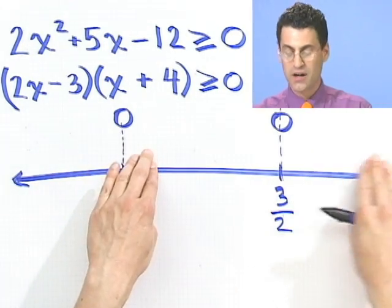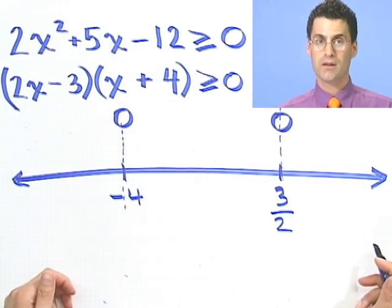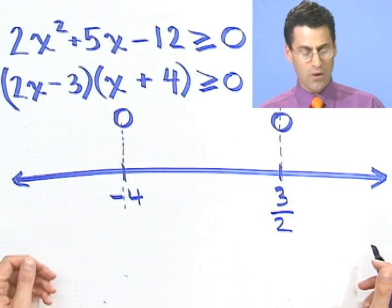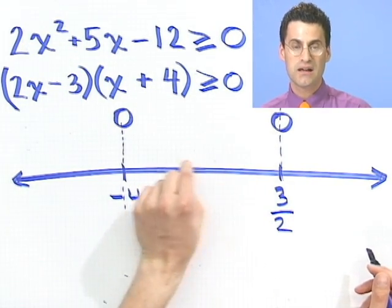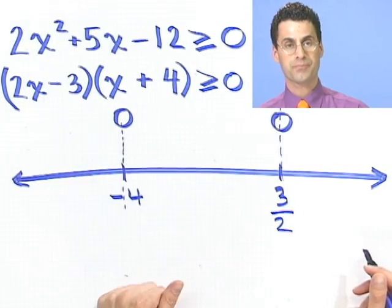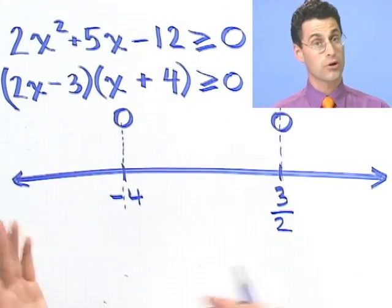But in these intervals here, I don't know what's going on. So how would I find this out? Well, all you have to actually do is pick just a random point in here and see what the sign of this is going to be. It's either going to be positive or it'll be negative.